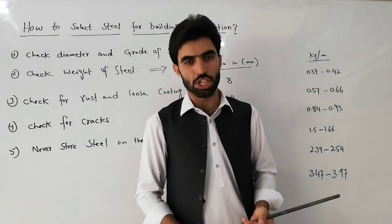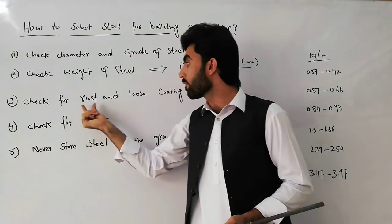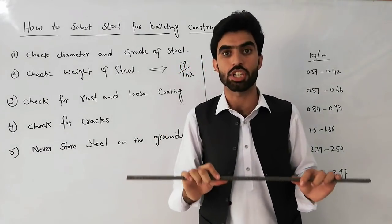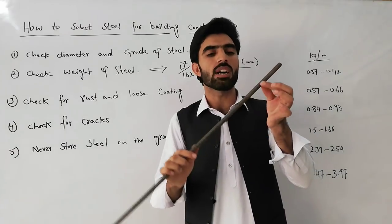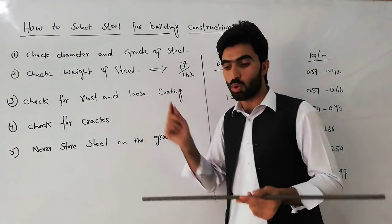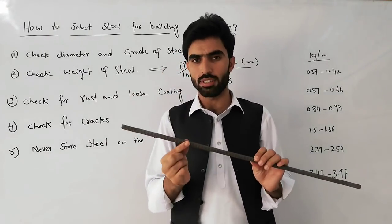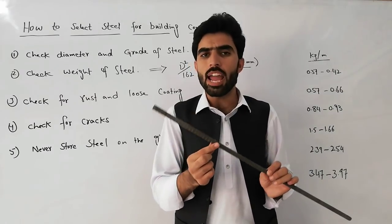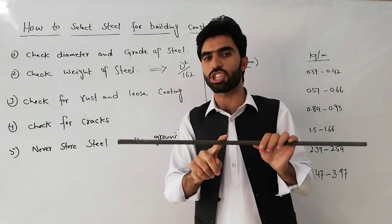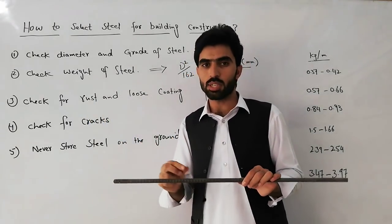The third point is to check for rust and loose coating. Before purchasing steel, you have to check for rust — the steel should not be rusted like this example. Also, the coating should not be loose; it should be in good quality. If the steel is rusted or has loose coating, do not use it in building construction.